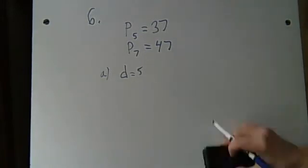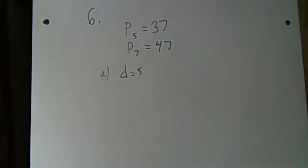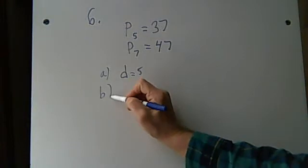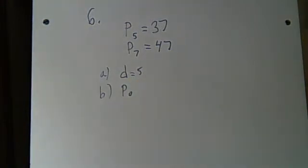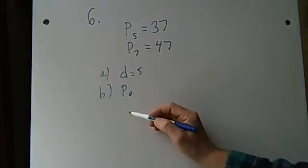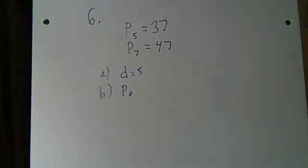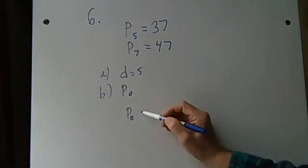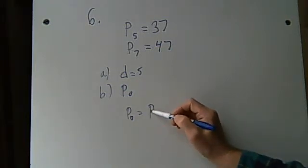Now, let's go on to B. Question B. What was the initial population, P0? Well, here we just have to work backwards. If P5 is 37, P0, well, I can say this.